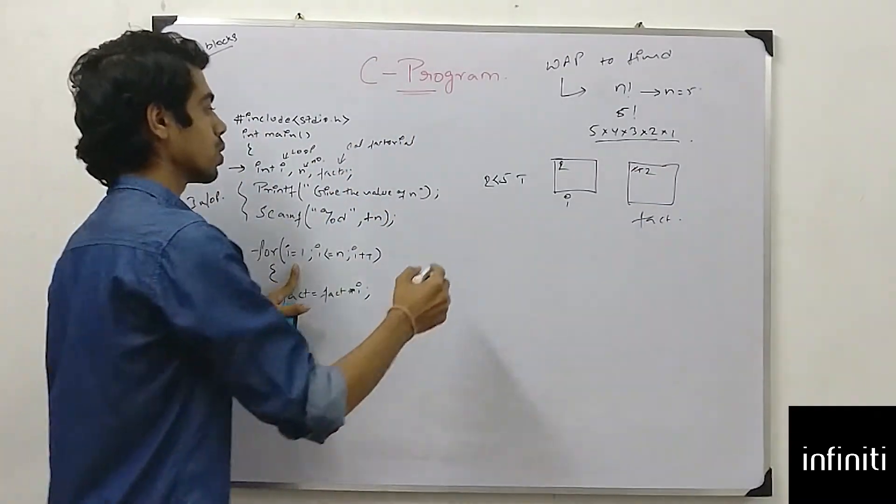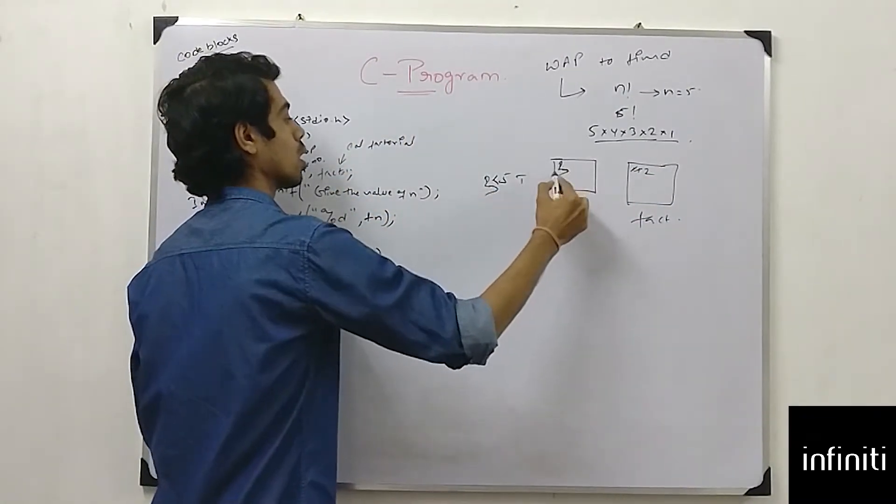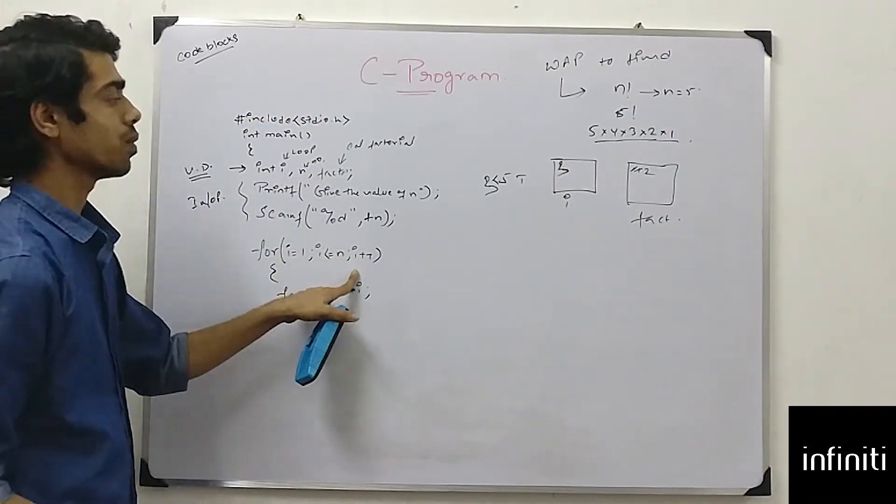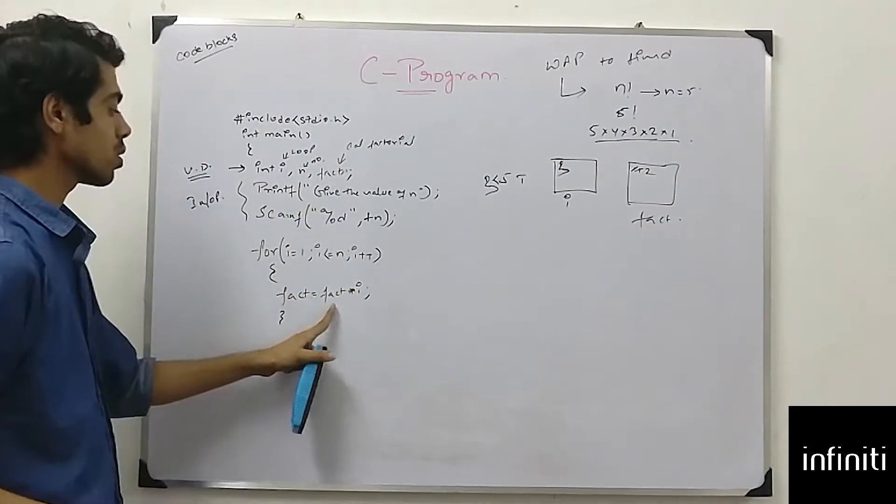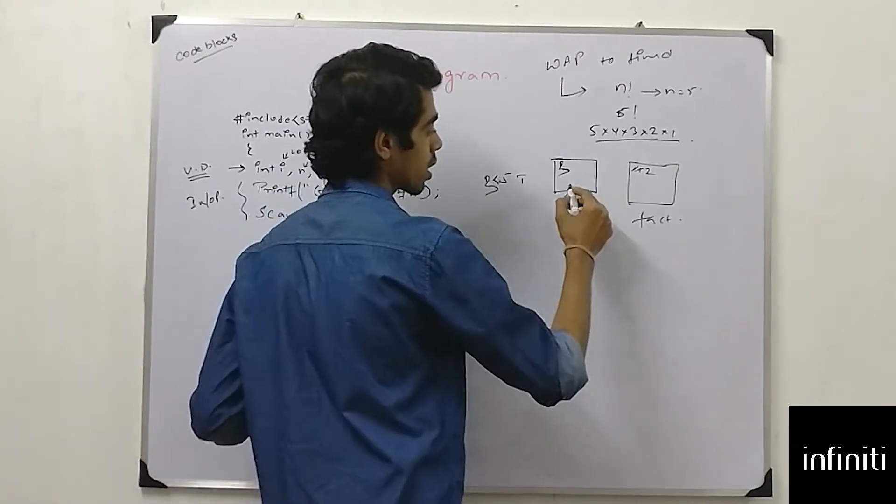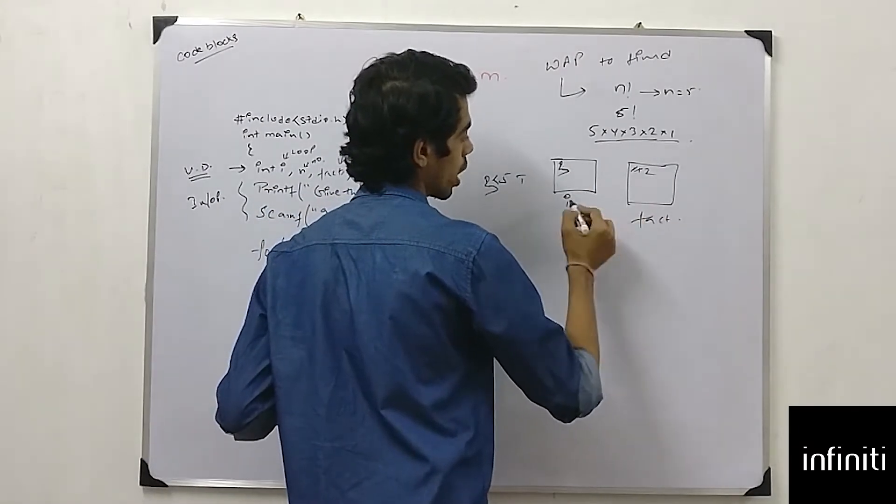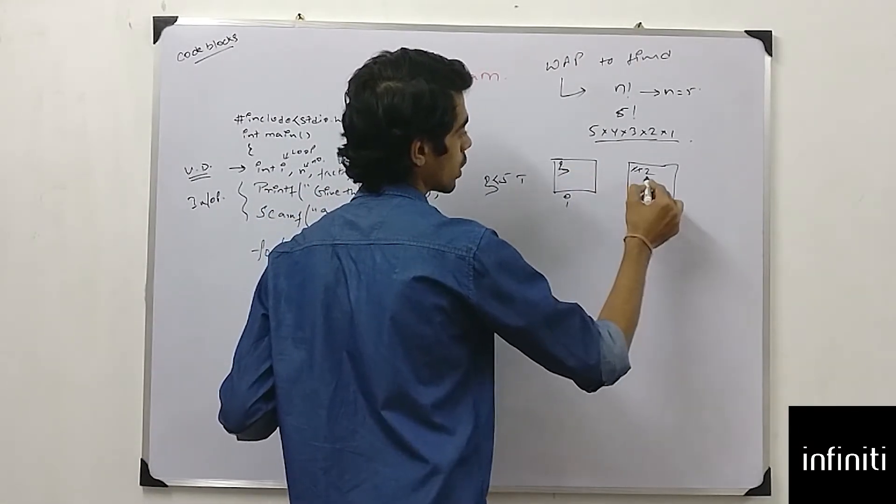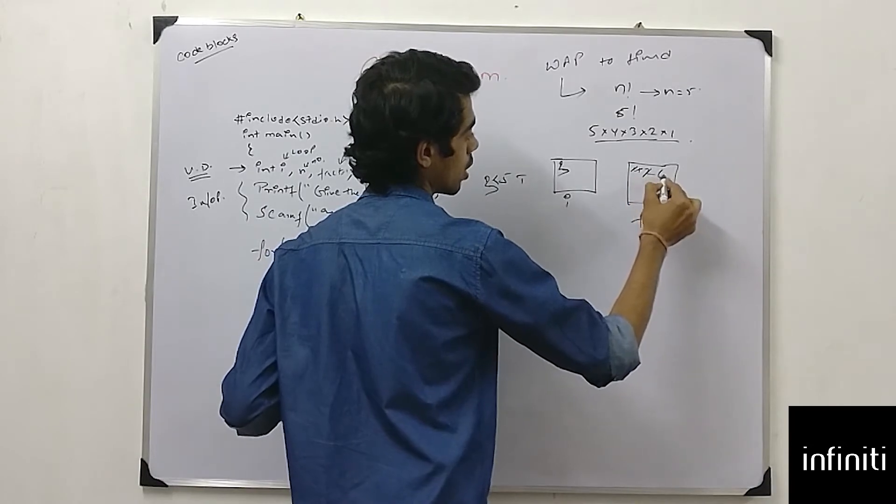Now i is equal to 3. 3 is less than 5, condition true. Fact is equal to fact into i. What is fact? 2. What is i? 3. 3 into 2 which is 6. And stored in fact, 6.